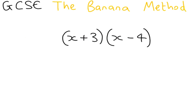Now we are going to look at a slightly more difficult question where not both of your signs are plus. So here we have x plus 3 times by x minus 4. So we want to multiply everything in this bracket by everything in this bracket.